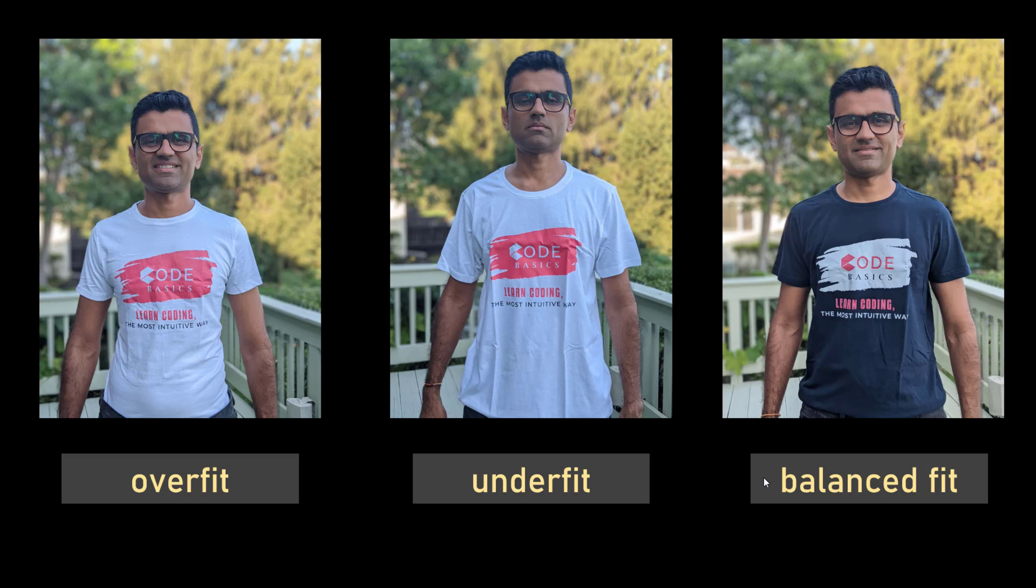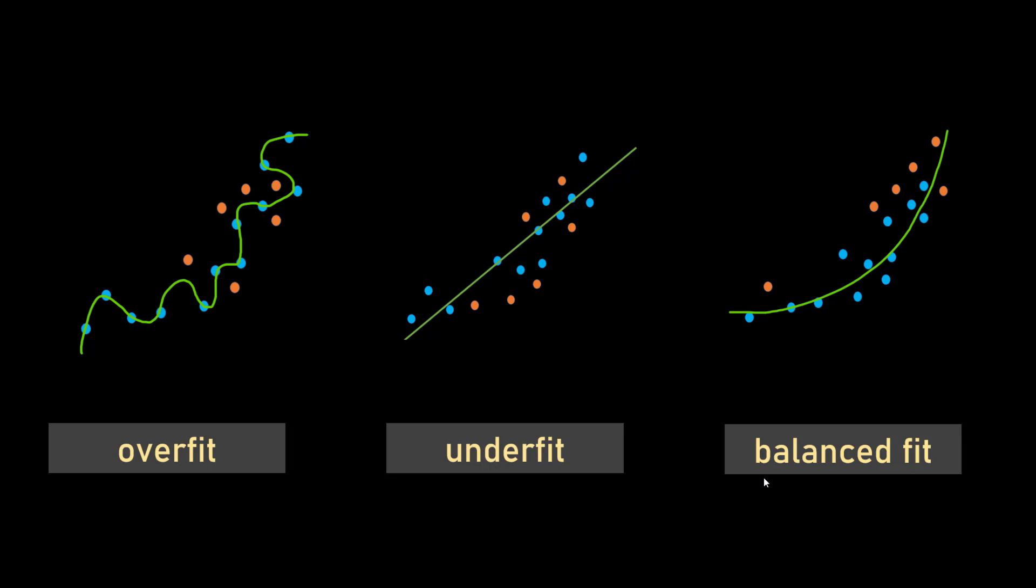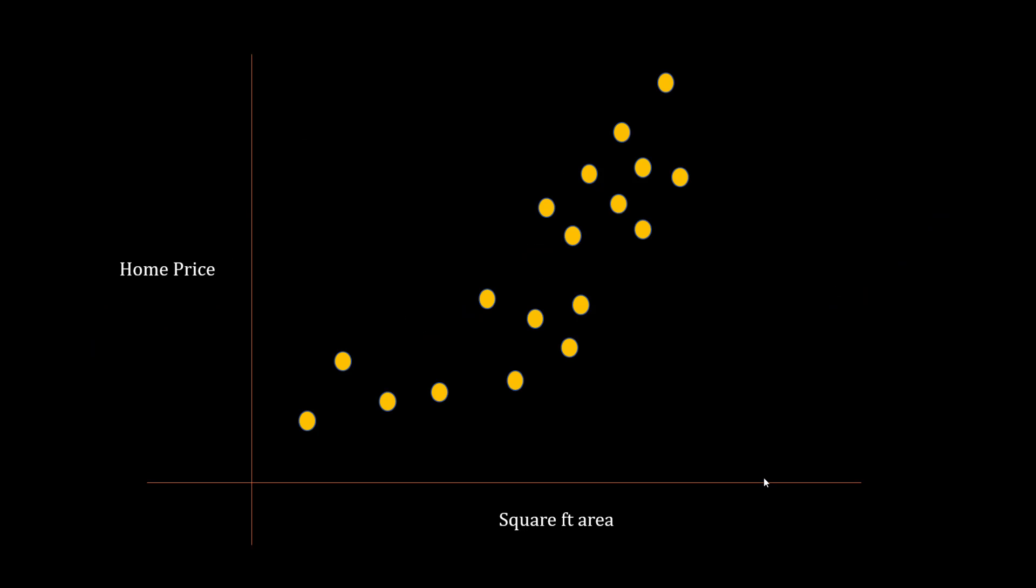Same concepts apply in machine learning world where your model can be overfit, underfit, or balanced fit. We're going to look at these scenarios using a simple housing price prediction example where we are using one feature which is the square foot area of a home.